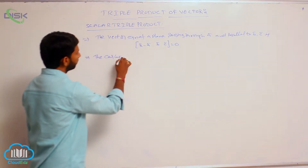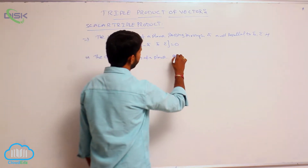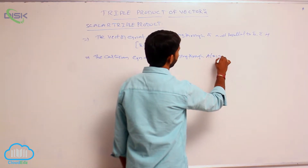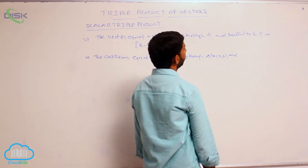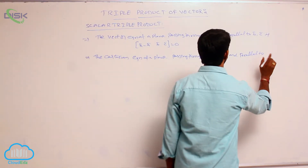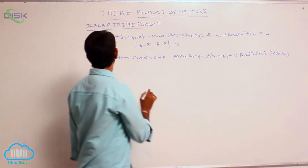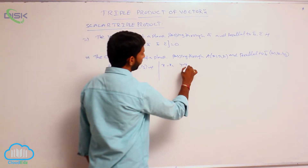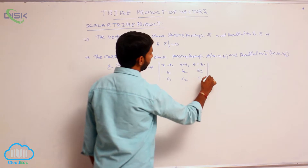The Cartesian equation of a plane passing through the point (X1, Y1, Z1) and parallel to the vectors B̅ = (B1, B2, B3) and C̅ = (C1, C2, C3) is the determinant of: |X−X1, Y−Y1, Z−Z1; B1, B2, B3; C1, C2, C3| = 0.